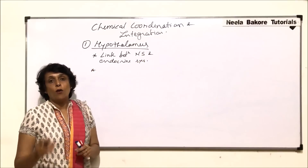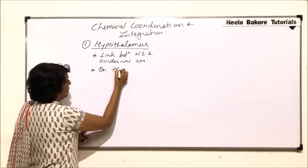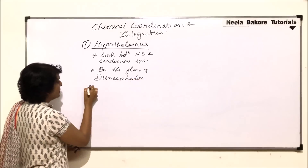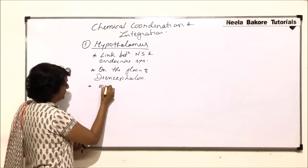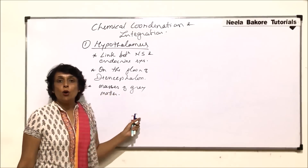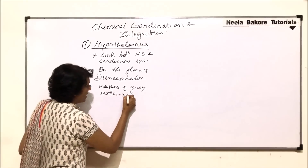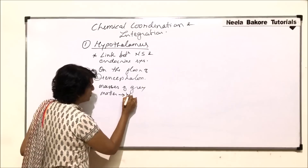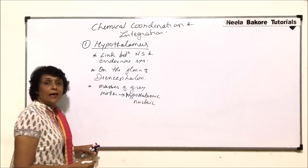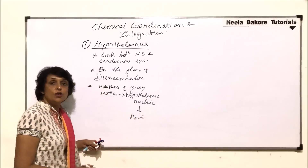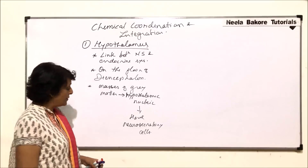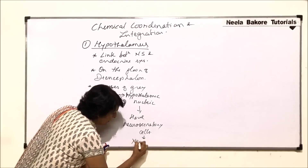Hypothalamus is located on the floor of the diencephalon. It is made up of masses of gray matter which are known as hypothalamic nuclei. These hypothalamic nuclei have neurosecretory cells, and it is these neurosecretory cells which secrete the neurohormones.